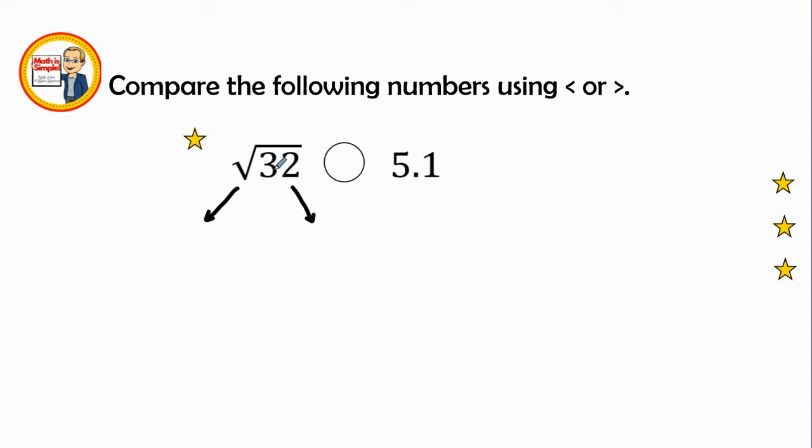So if we look at radical 32, we know that radical 25, because you're getting really good at memorizing your perfect squares. Radical 25 is 5. And radical 36 is 6. So then we ask ourselves, how far is 25 from 32? And that's plus 7. And this is going to be plus 4.